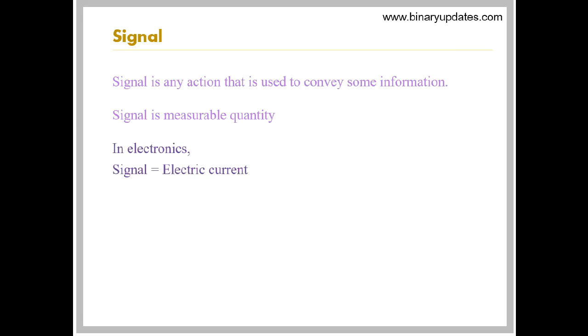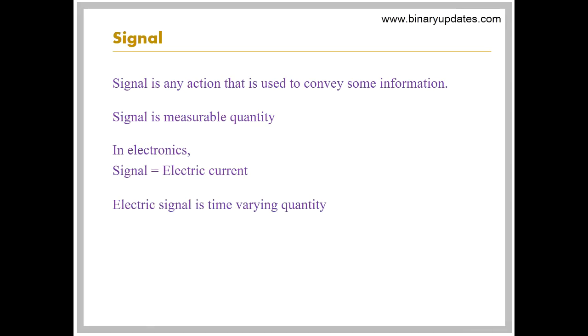In electronics, the signal is simply defined as an electric current that represents some information. Signal is time varying quantity. That is, its value changes with change in time. Later on, this concept will be explained in detail.